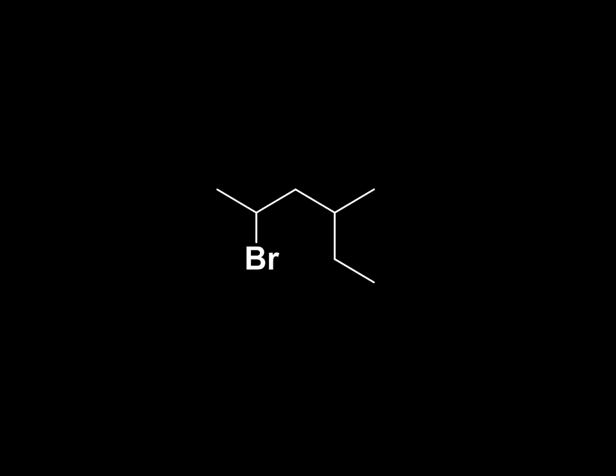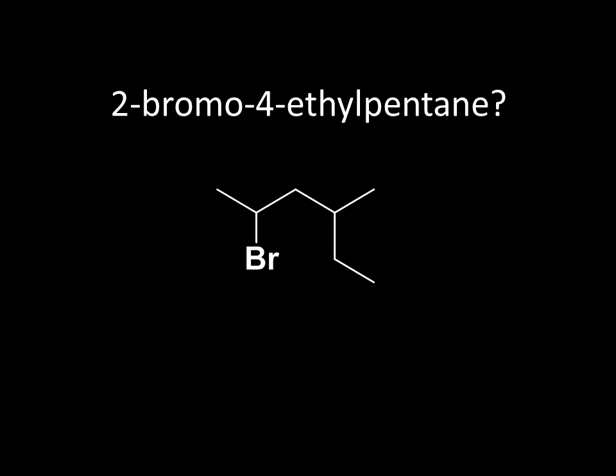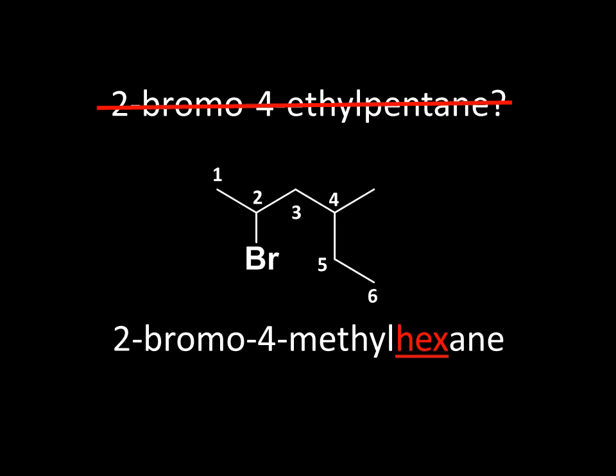One last example for you to try — what is this compound? Were you tempted to call it 2-bromo-4-ethyl pentane? Hopefully not, because that misses the longest chain. It's not the five-carbon chain through there — in fact, down here there are six carbons all attached to each other. So this is now a hexane. There's a bromine on C2 and a methyl group on C4, making this 2-bromo-4-methyl hexane.